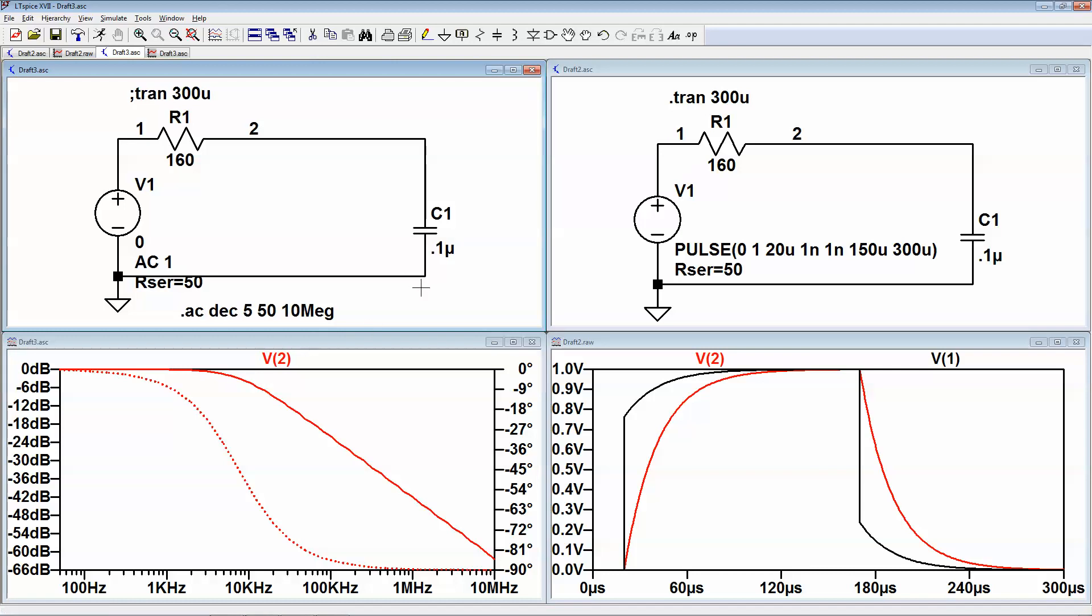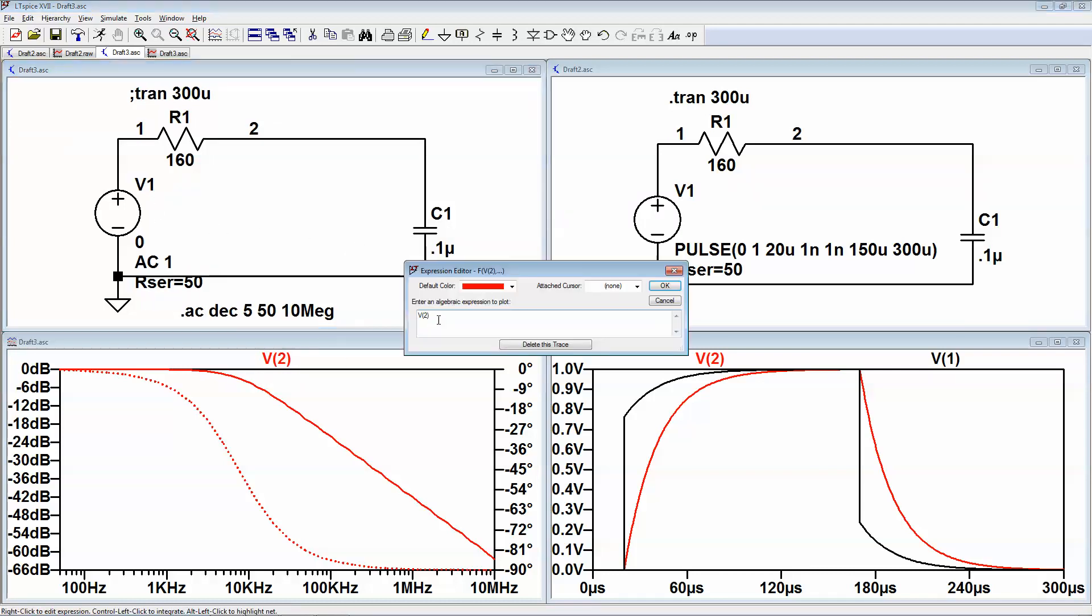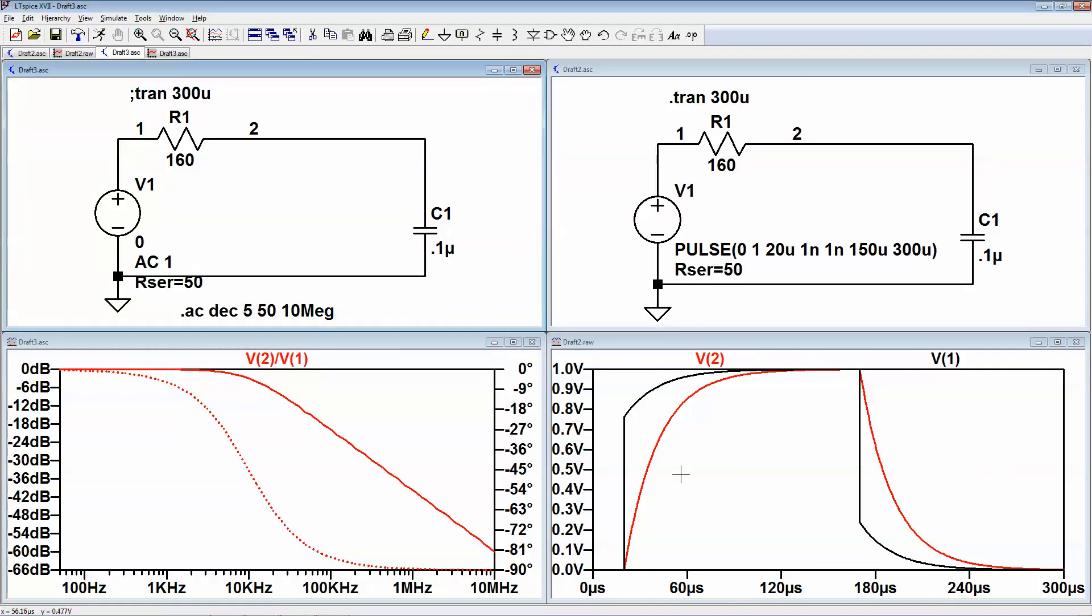Now over here, it doesn't look too different, but let's actually take the gain. I don't know if you could see, but it just slightly changed. So I'm going to plot the gain and then V2. Now because the input is one, V2 is usually the gain.